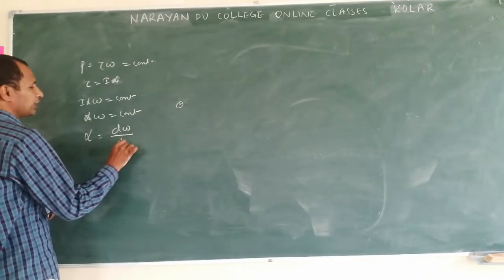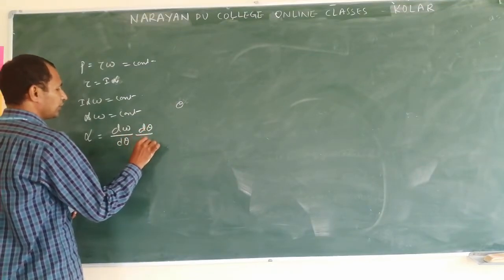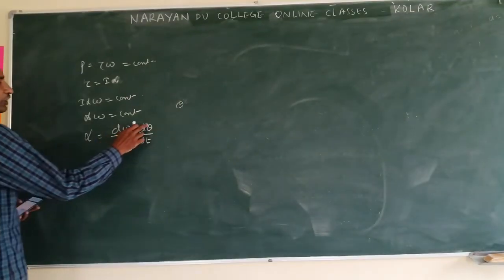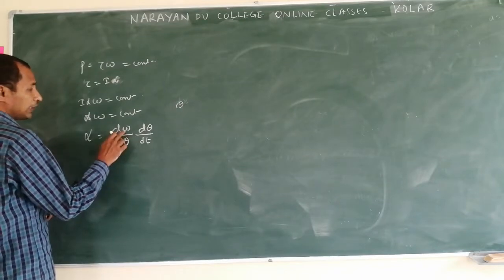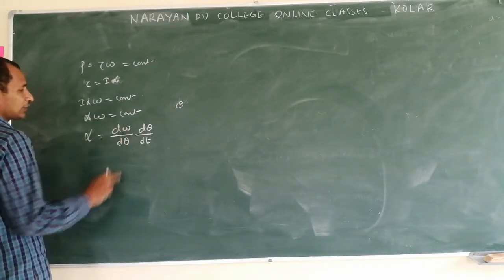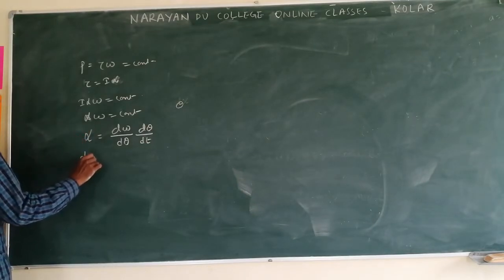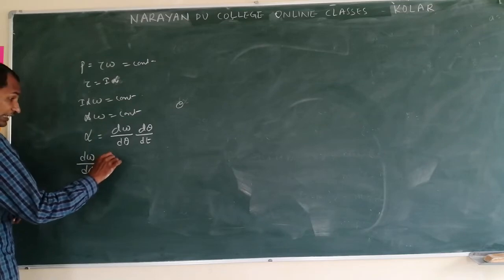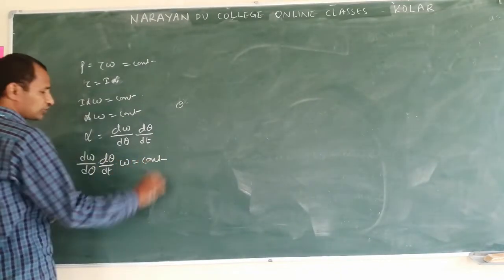We can write d omega by dt into dt by d theta. If you multiply by d theta by dt - if these two cancel, how do you get d omega by d theta? Rate of change of angular velocity. So d theta by dt into omega is equal to constant.